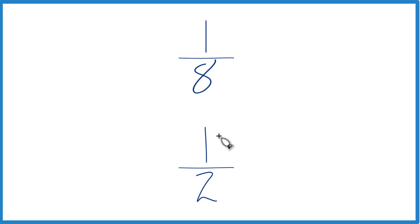You might even be able to reason it out. You had an object, say, and you cut it, one object here, cut it into eight pieces. And then down here you have the same object and you cut it into two pieces. Which one has larger pieces? Yeah, it's the 1 half. So 1 half is greater than 1 eighth.